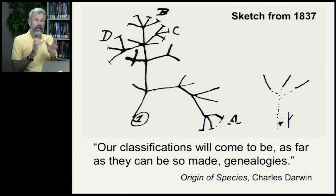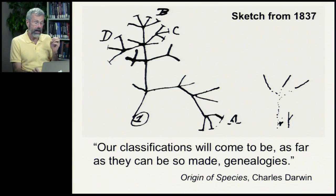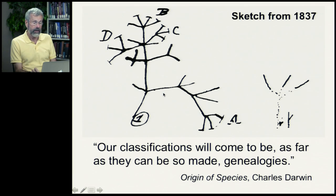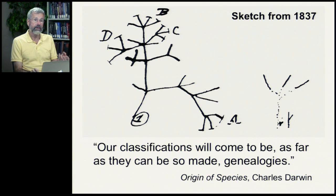Darwin, in his sketchbooks while he was still on the Beagle, drew out this very first phylogeny. He recognized that our classifications of species — seeing all these different points as being different species of animal from a common ancestor — he said our classifications will come to be, as far as they can be so made, genealogies. So family trees, common ancestry, similarities by descent.